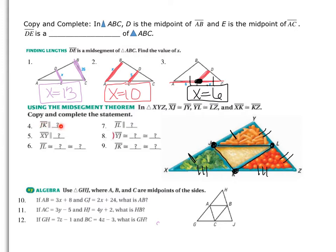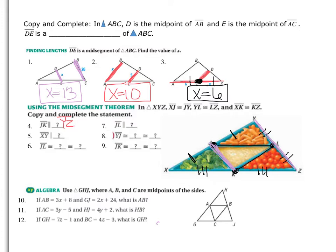Remember: the parallel symbol and the congruent-to symbol are different — it's very important to differentiate between them. JK is parallel to the third side YZ. XY is on the outer edge — the third side is always parallel to the mid-segment, so XY is parallel to KL.